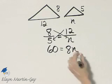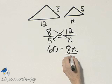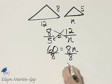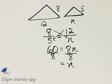And then let's finish solving by dividing both sides by 8. The right side, I'll have 1N, or simply N. The left side, let's go ahead and simplify.